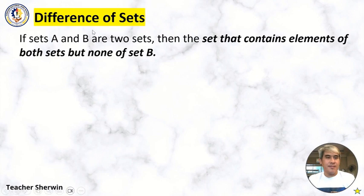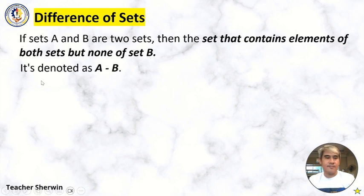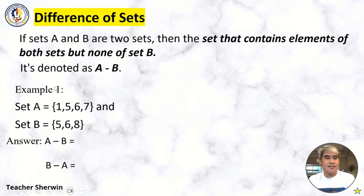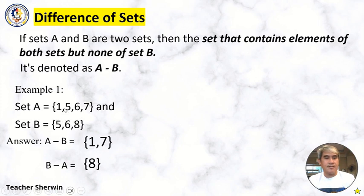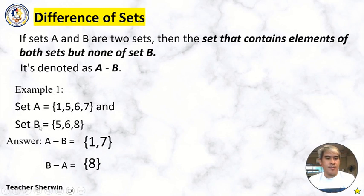Difference of Sets. If sets A and B are two sets, the difference is the set that contains elements of Set A but none of Set B, denoted as A minus B. Set A = {1, 5, 6, 7} and Set B = {5, 6, 8}. For A minus B, remove 5 and 6 from Set A — the answer is {1, 7}. For B minus A, remove 5 and 6 from Set B — the remaining element in Set B is {8}.